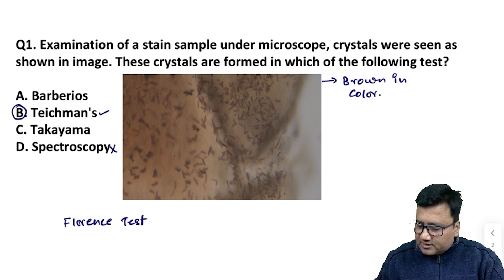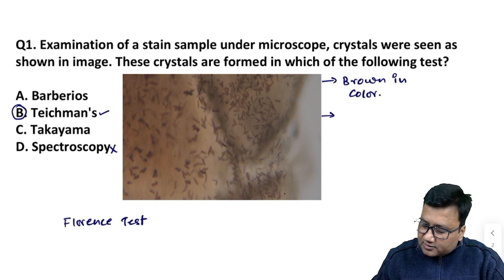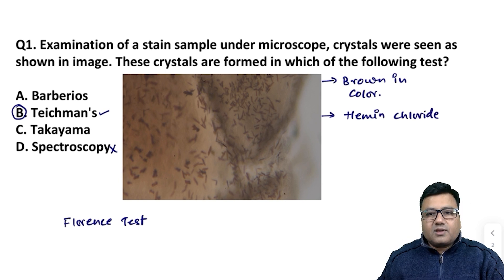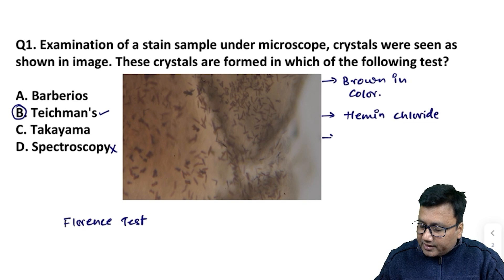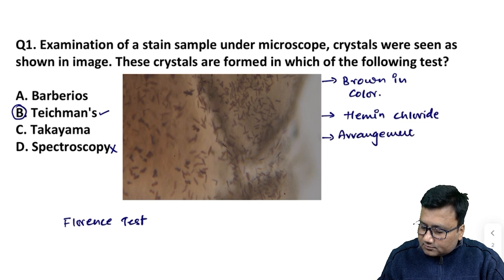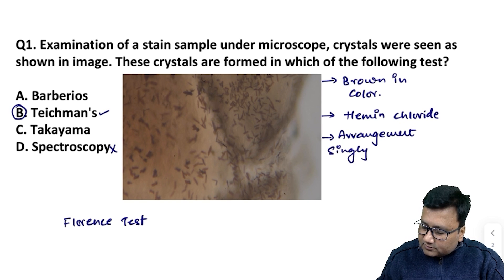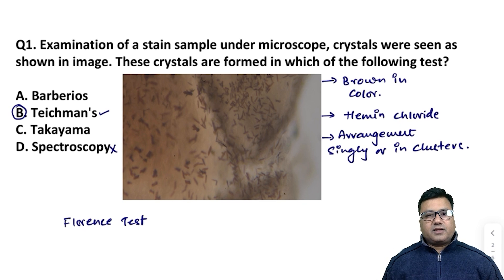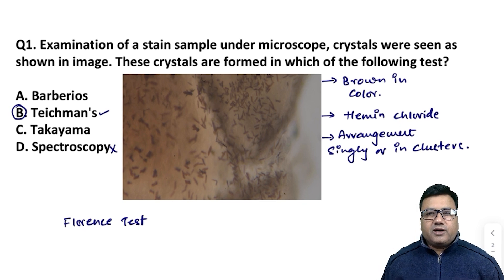In Teichmann's test, the crystals are crystals of hemin chloride। इनका arrangement कैसा होता है — they are arranged singly or in clusters, जो कि हम photograph में देख पा रहे हैं।